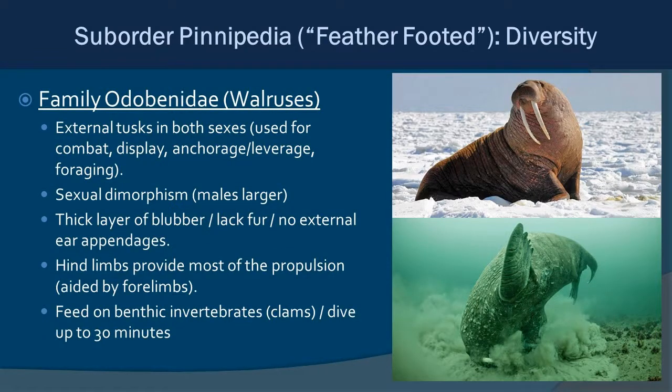Family Odobenidae are the walruses — very distinctive with their long external tusks, which both sexes possess. The tusks are used for combat, display, anchorage in ice, and foraging. They are sexually dimorphic with males getting much larger. They have very thick blubber but relatively little fur compared to seals and sea lions — just whiskers — and no external ear appendages. A picture on the bottom shows a walrus foraging through muck for shellfish.